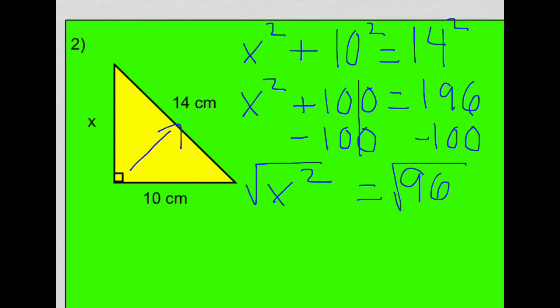So when I go from x squared, now I go to x. And this is not a perfect square, so this is actually going to be an approximate answer. We'll do that to one tenth. So the square root of 96 is 9.797958. Let's just call that 9.8 centimeters. And that's not an exact answer, that's an approximate answer.